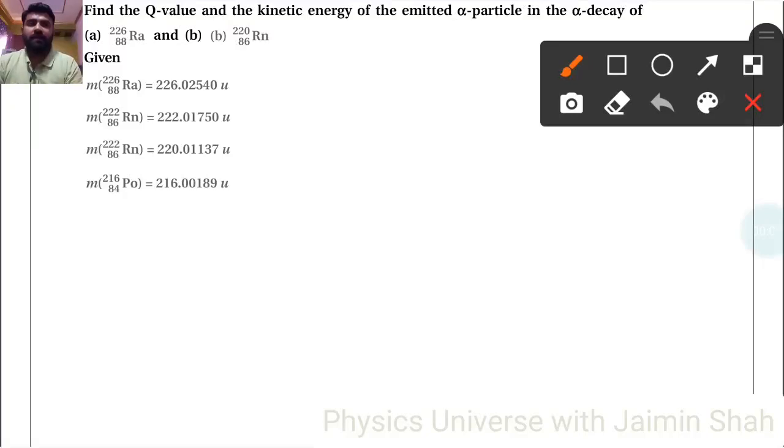Find the Q value and the kinetic energy of the emitted alpha particle in the alpha decay of radium-226 to radon-222. All values are given.